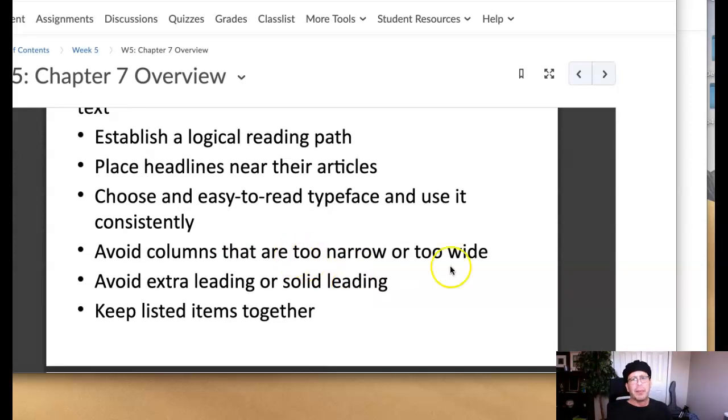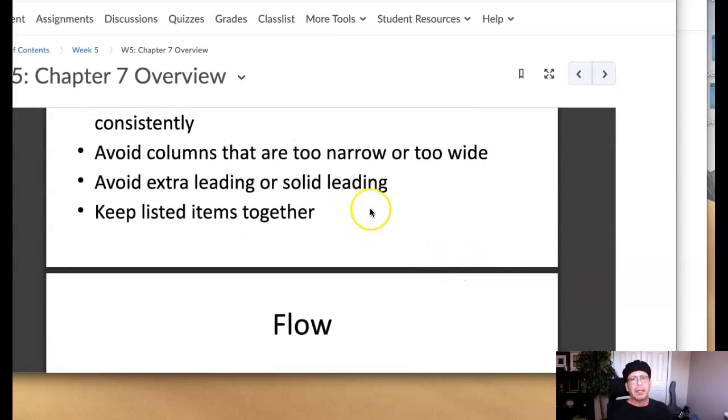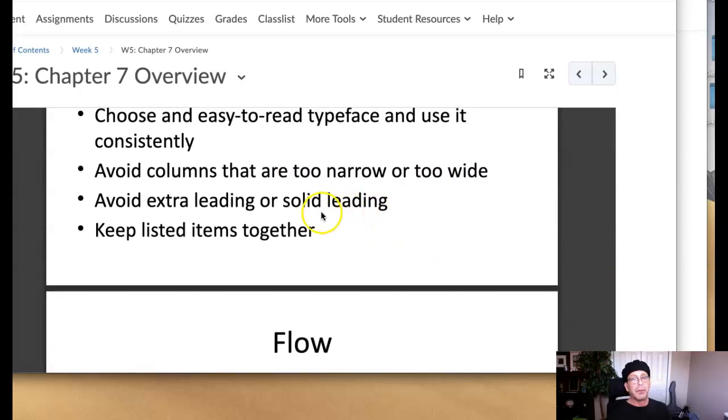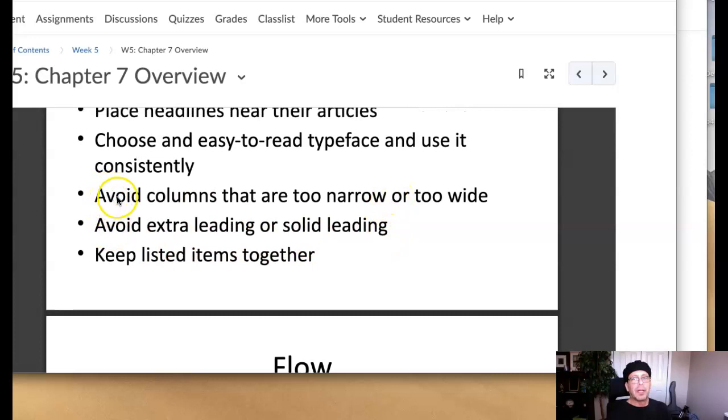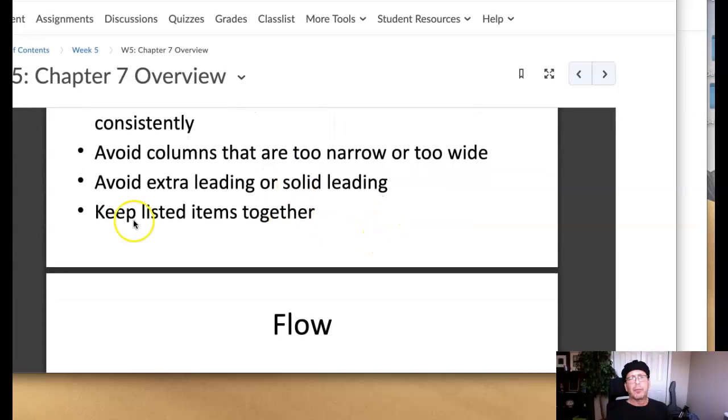Of course, avoid columns that are too narrow, too wide, and avoid extra leading or solid leading. Leading, of course, is the space between what, guys? Leading is the space between the lines of type, and kerning is the space between individual letters. Kerning is closely associated with tracking. Kerning is the space between individual letters, whereas tracking is the space between letters in the entire word. So you're adjusting kerning individually, but you're adjusting tracking as a way to adjust the space between the letters in the entire word. And of course, again, we're referring back to proximity by keeping listed items together.